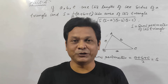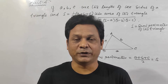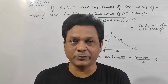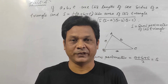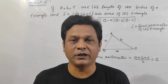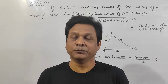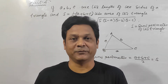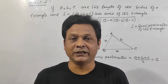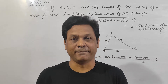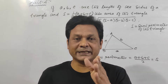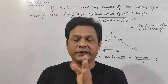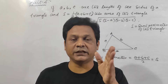Hello everybody. Today I am going to tell you about mensuration, specifically the elementary mensuration Rule 2. I will tell you how to find out the area of a triangle when the lengths of the three sides are given. In Rule 1, I told you if base and height are given, then area equals half into base into height.